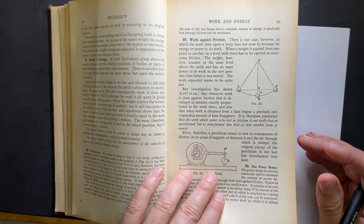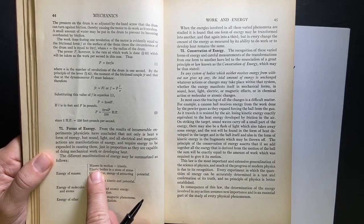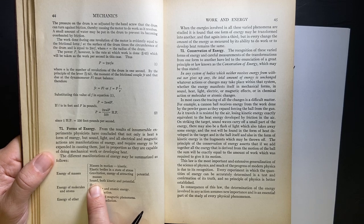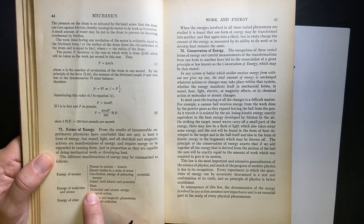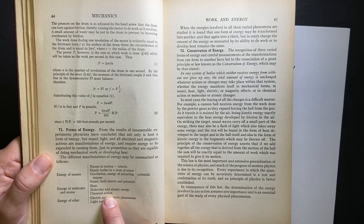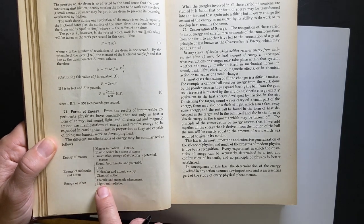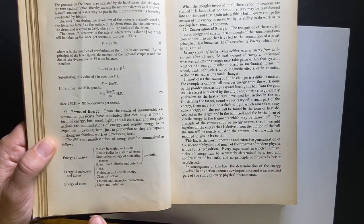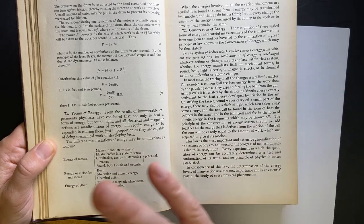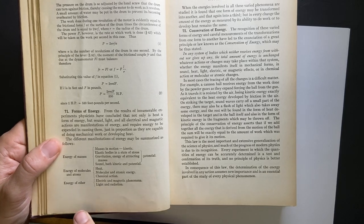Forms of energy. Energy of masses. Kinetic, elastic, gravitational, sound. Both kinetic and potential range. Energy of molecules and atoms. Heat, molecular, atomic energy, chemical action. Energy of ether. I guess they're talking about light. Energy of light, electric and magnetic phenomena, light, and radiation. But it's funny that they still use this. This is in 1935. So Einstein's, and Michelson and Morley, a lot of people did experiments before this to show that light does not travel through the ether. That's strange.